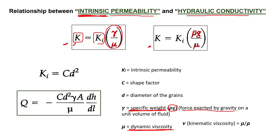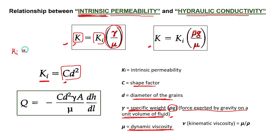Specific weight is the force exerted by gravity on a unit volume of fluid. Intrinsic permeability is dependent only on the medium, and its formula is Ki equals C times D squared — where C is the shape factor and D is the diameter of the grains. So intrinsic permeability is directly proportional to the square of the diameter of the grains. The constant C, which is the shape factor, comes when you remove the proportionality sign.